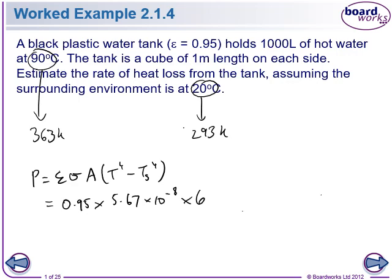Okay, 6, what else have we got? T to the 4 times 363 to the 4 minus 293 to the 4. Okay, so this looks complicated, but we're just plugging in the numbers here. Alright. I get 3229.64 watts.